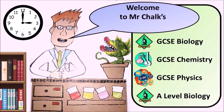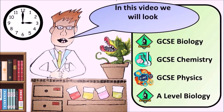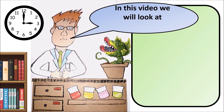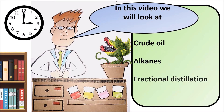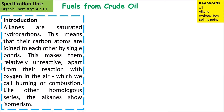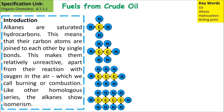Welcome to Mr. Chalk's revision tips. In this video we will look at crude oil, alkanes, and fractional distillation. Alkanes are saturated hydrocarbons — this means that their carbon atoms are joined to each other by single bonds, which makes them relatively unreactive, apart from when they are combusting in air. We can see from these diagrams that they form a homologous series.